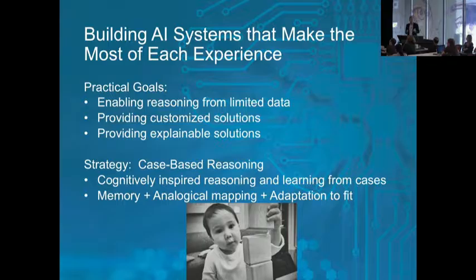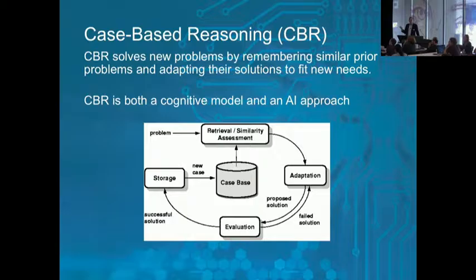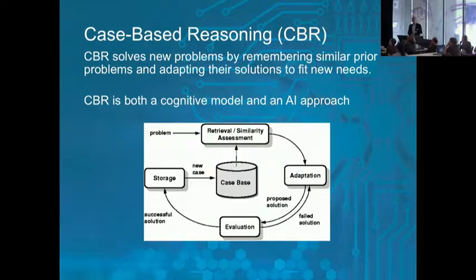Case-based reasoning is cognitively inspired. It's basically a combination of memory processes — with challenges of how information should be organized to retrieve relevant cases — and analogical mapping to bring over a potentially complex structured solution, such as a plan involving many components and causal knowledge. To deal with novel situations, the system must adapt that case to fit the new situation. The basic process is a cycle where a system receives a problem, does situation assessment, retrieves prior cases, assesses similarity, adapts the case to fit — possibly in a repeated process — and then applies it.